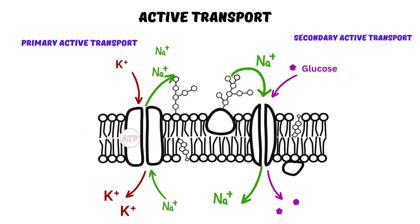Here you can see both primary and secondary active transport. In primary active transport, ions are transported using ATP against their concentration gradient. And in secondary active transport, two types of molecules or ions are simultaneously transported using a cotransporter protein.